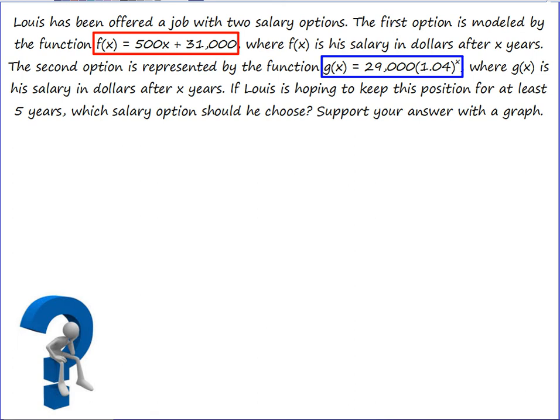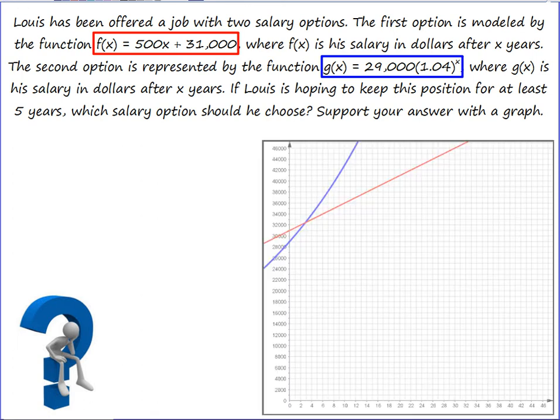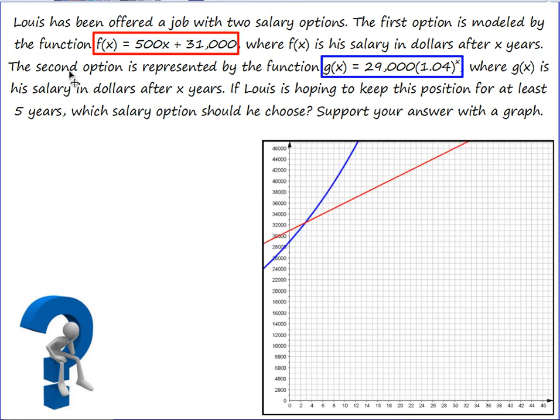So first up, let's take both functions and graph them. I definitely had to change scale this time to even be able to see where those two functions were. And I'm going to pay attention to where the two functions meet. You can see that at the beginning of his job, f(x) pays him more money. He starts at $31,000 over the $29,000 that function g would pay him.